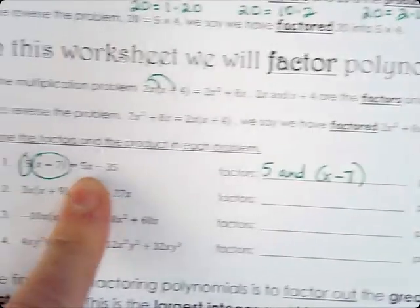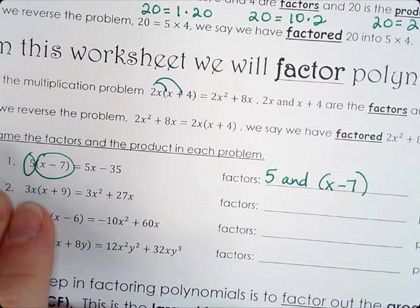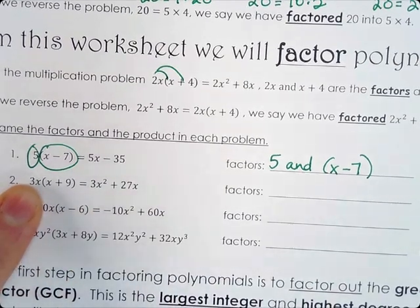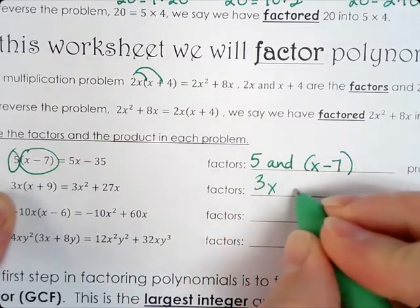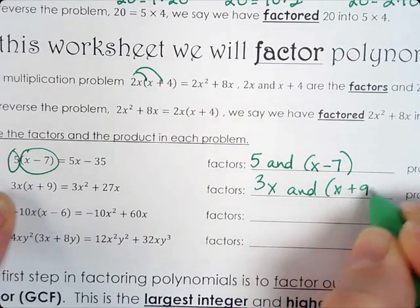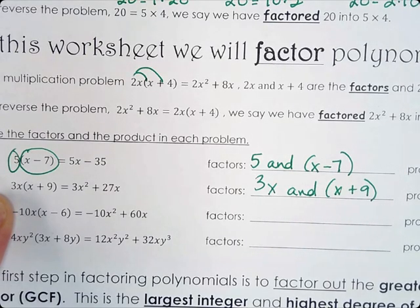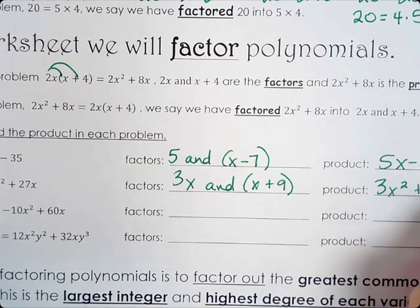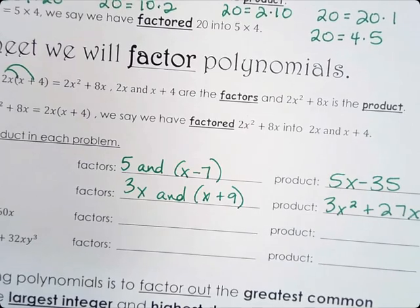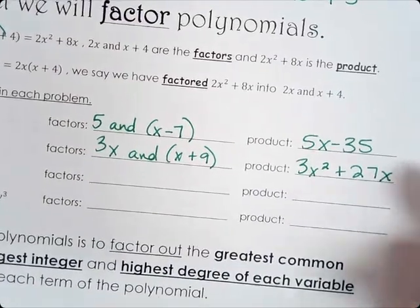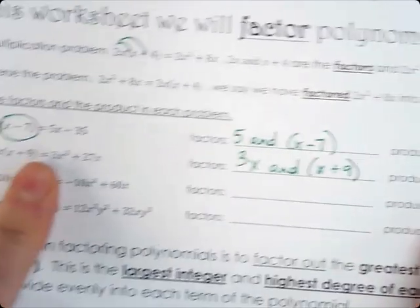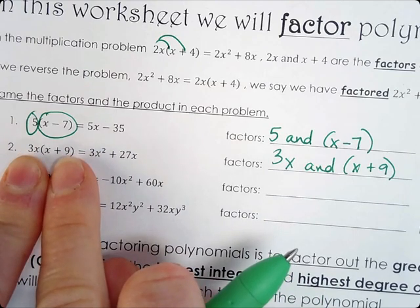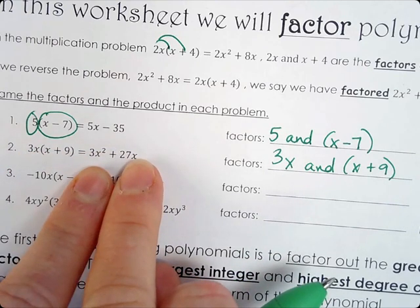So you look for your greatest common factor. The next one says 3x(x + 9) = 3x squared + 27x. So 3x is being distributed — our factors are 3x and (x + 9), and our product is 3x squared + 27x. These are equivalent: this is in factored form and this is in simplified form after you multiply it.